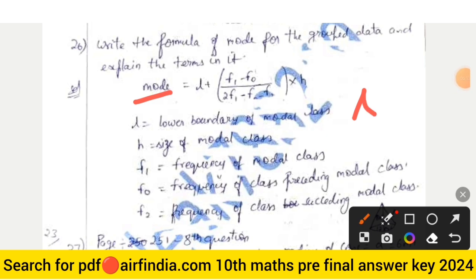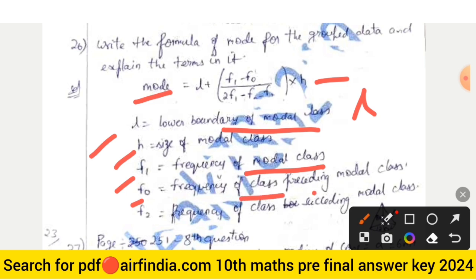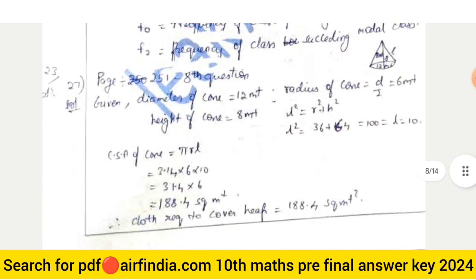Question twenty-six — mode formula: Mode = L + [(f1 − f0) / (2f1 − f0 − f2)] × h, where L is the lower boundary of the modal class, h is the class size, f1 is the frequency of the modal class, f0 is the frequency of the class preceding the modal class, and f2 is the frequency of the class succeeding the modal class.